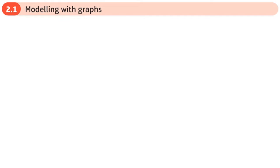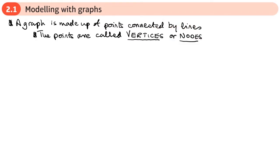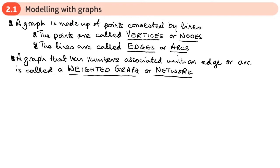So first, a few definitions. What is a graph? Well, a graph is made up of points connected by lines. The points are called vertices or nodes, and the lines are called edges or arcs. Now, if a graph has numbers associated with an edge or arc, then the graph is called a weighted graph or a network.